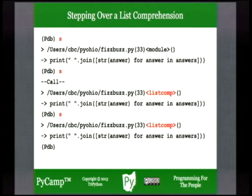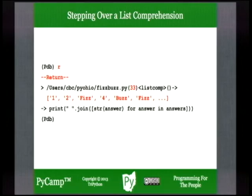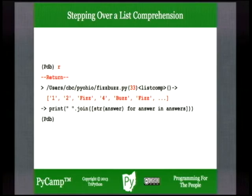If we just keep hitting 's', we're going to run around that list comprehension 100 times — rather tedious. The debugger is telling you you're in a list comprehension, stuck in the twilight zone. But on Python 3, the 'r' command works for list comprehensions just like it does inside functions — it will complete the list comprehension, tell you it's ready to return from it, and show you the Python object the list comprehension evaluated to: a list of strings ready to join up and print out.